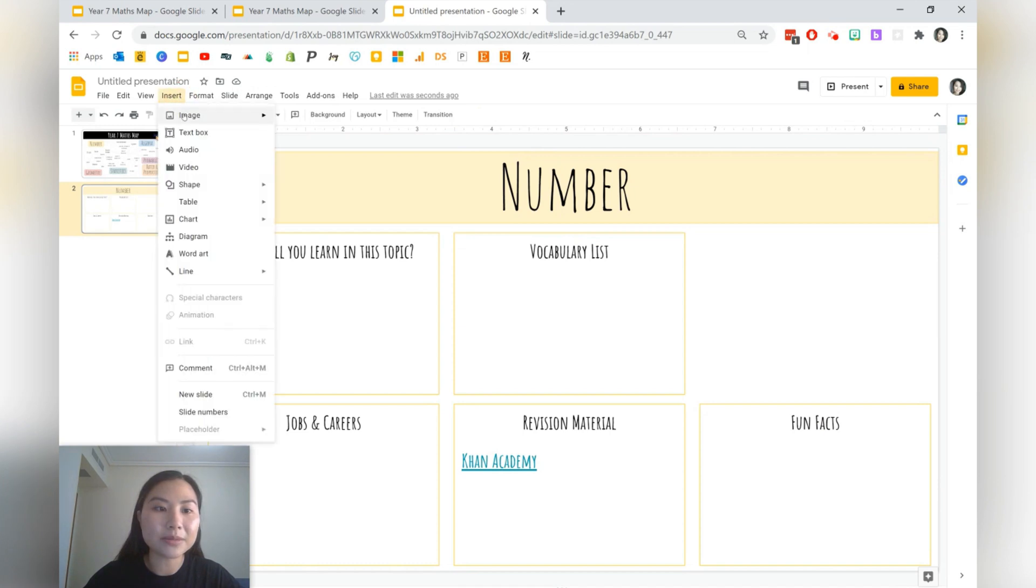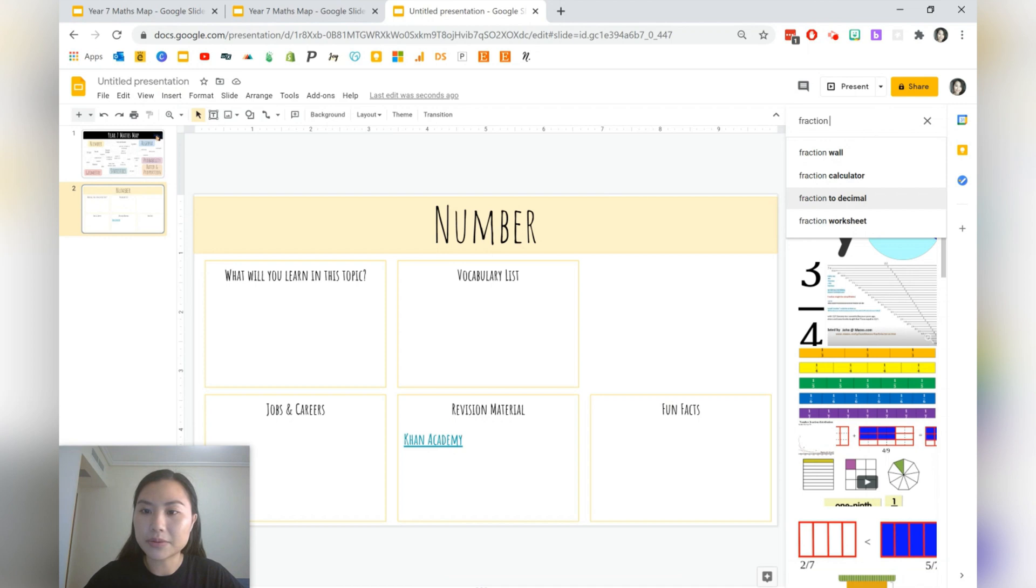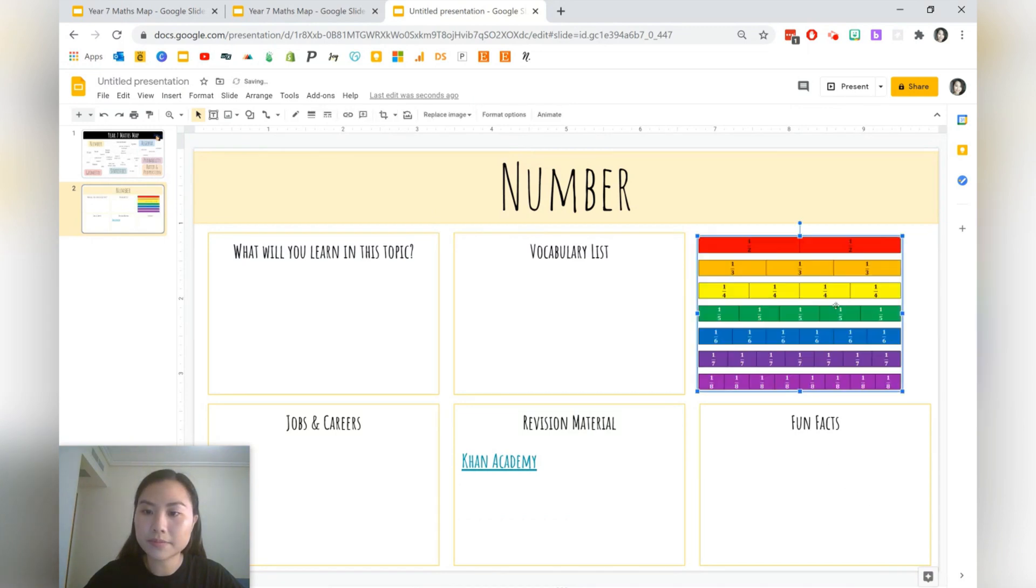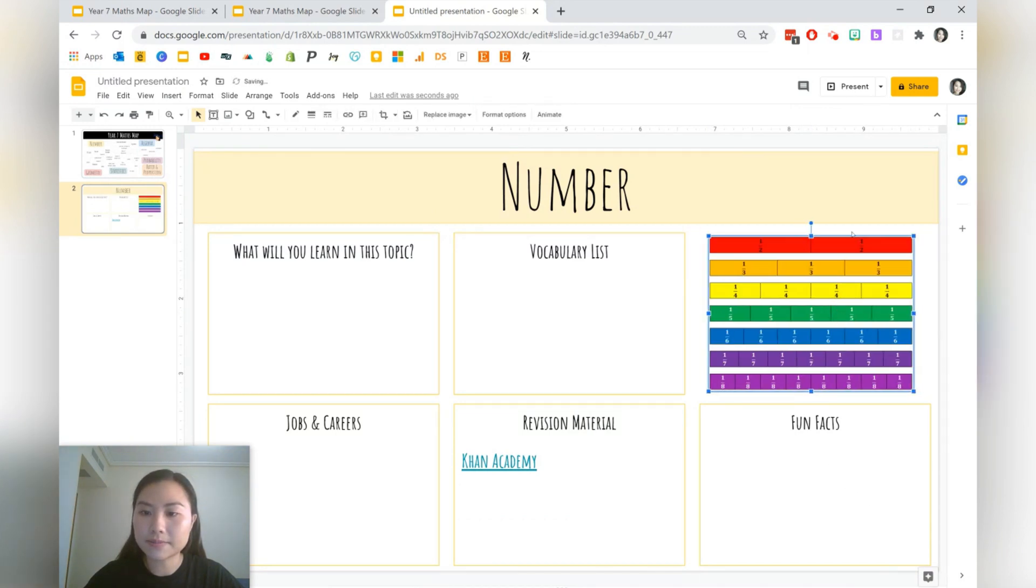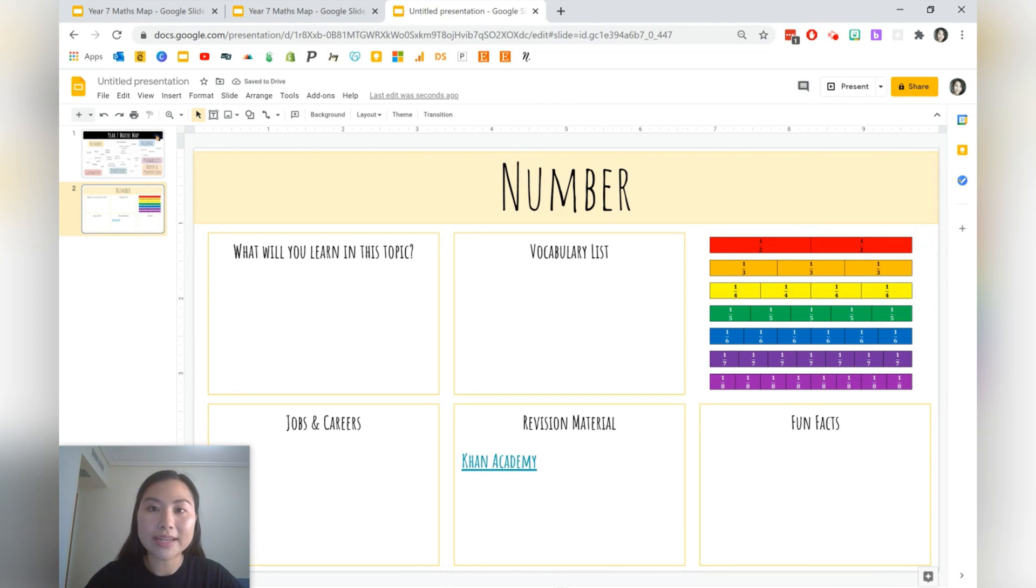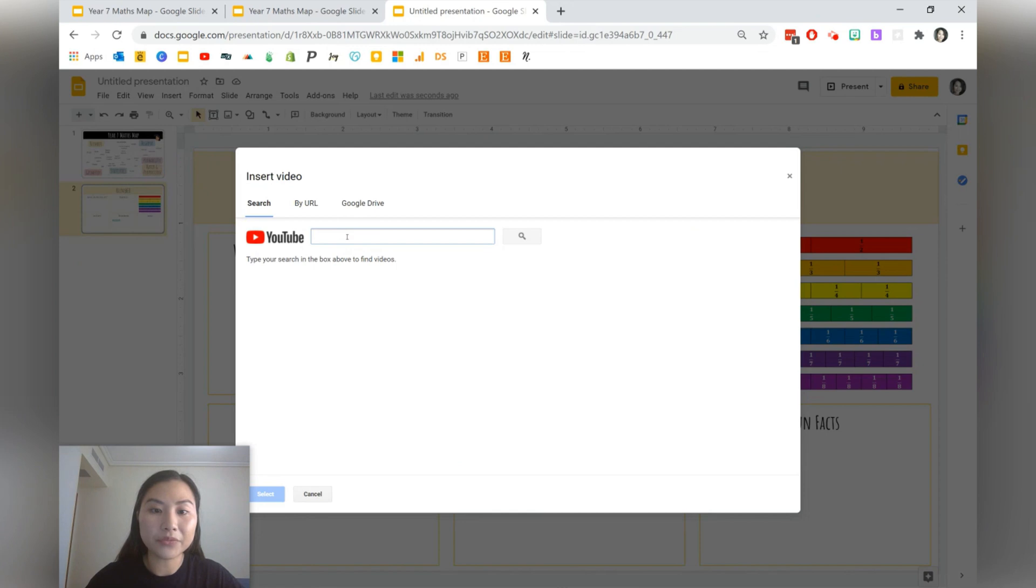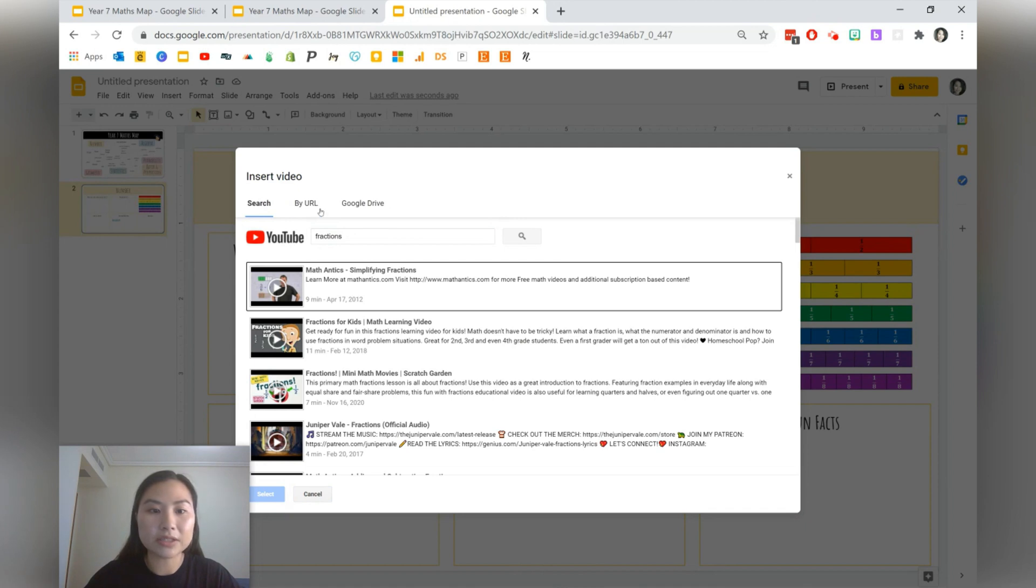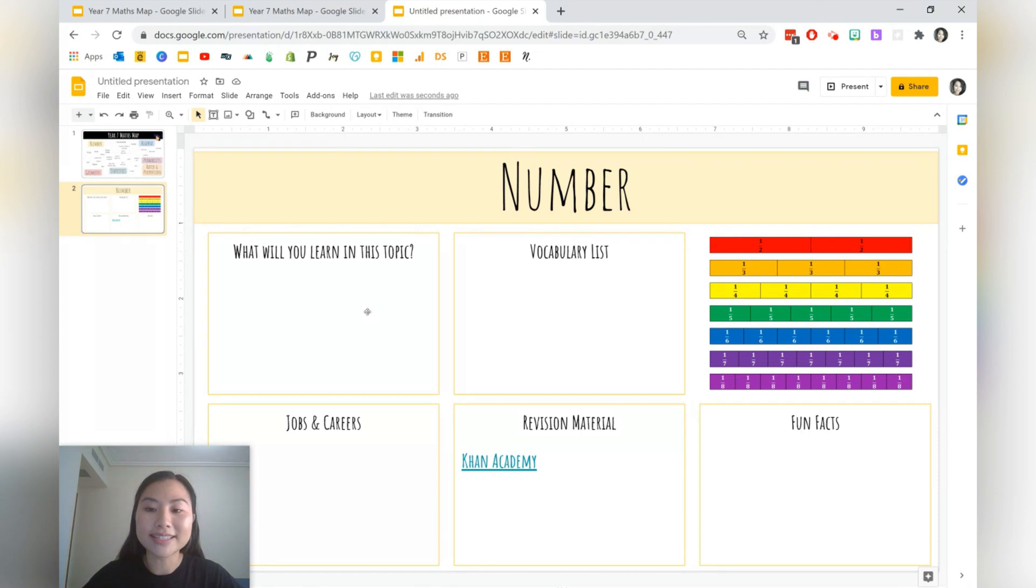You can also go and add images. So let's go and add image, search the web and here I'm going to look for a fraction wall. Insert and here it is. Okay you can also go and add videos. So we'll go to insert, click video and just you can search something on YouTube, something related to fractions maybe, or you can go and just drop the URL into here and just insert that into your slides.